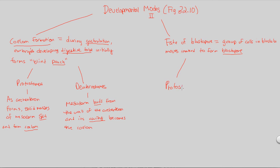In protostomes, the name means 'first opening' — proto meaning first, and stome meaning opening. These organisms are classified this way because their first opening is actually the mouth. The blastopore is that opening, the result of the archenteron forming, and in protostomes it becomes the mouth.